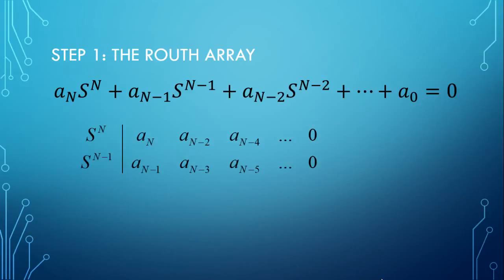Then what you do is you put this into this special array, and I've given you the first two lines. So we start at the top with S to the power of N, which is your highest power, and then we start writing out the coefficients into a table. So we've got AN is the coefficient of S to the power of N. We skip this term. You see how A to the N minus 1 is missing, jumping straight to A to the N minus 2, and then you're jumping another term to N minus 4.